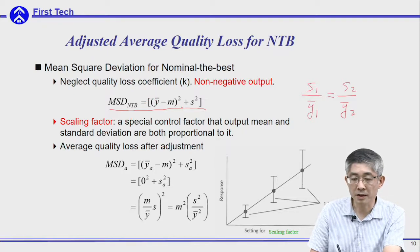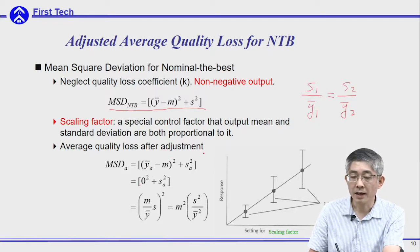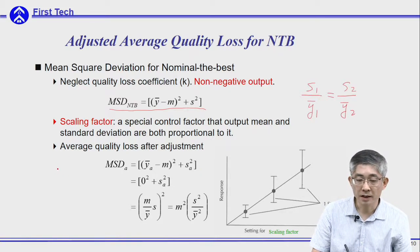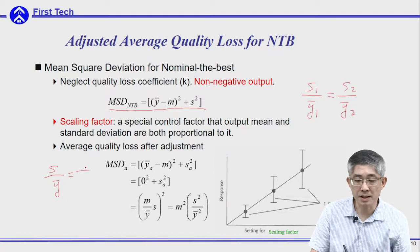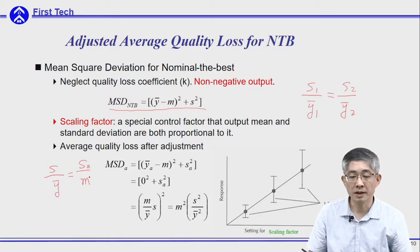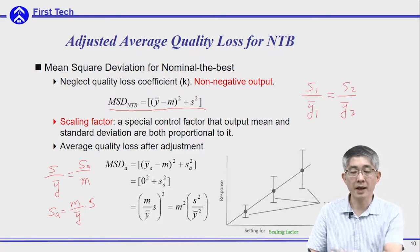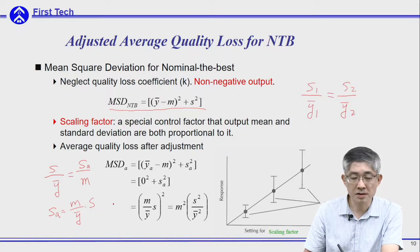Once you use this scaling factor to move the mean output to target, the first term of the average loss will cancel out, and the standard deviation will change from the original value into s_A. Using this relationship, we can understand the original standard deviation over mean output equals the adjusted standard deviation over the new average, which is the target. So the standard deviation after multiplication will be (m / ȳ) multiplied by s.